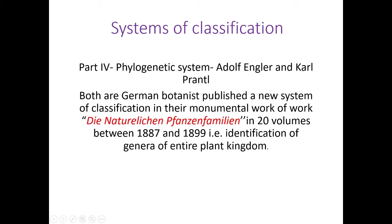In these 23 volumes, they classified the entire plant kingdom starting from algae up to the angiosperm. Engler and Prantl's system is based on Bentham and Hooker's classification system. Bentham and Hooker's classification system is one example of the natural classification system, which is based on natural affinities and differences between plant groups. The angiospermic families were arranged by Engler and Prantl according to the increasing complexity of the flower, fruit, and seed development.